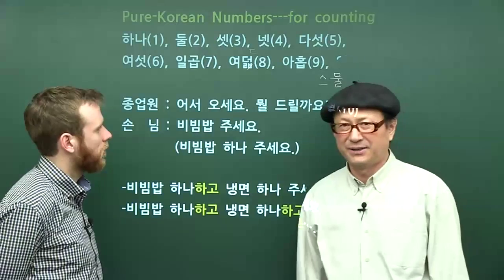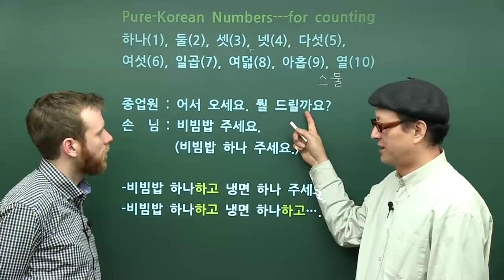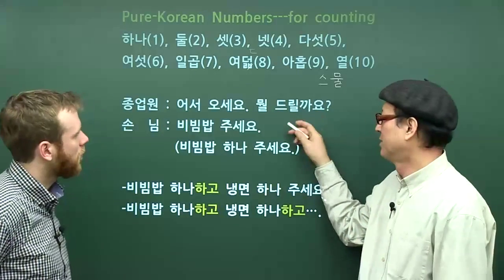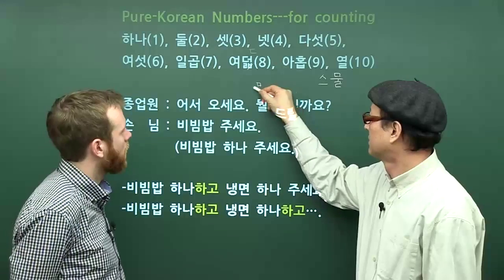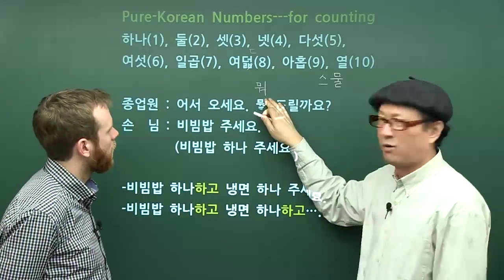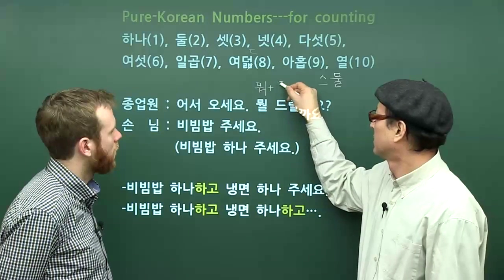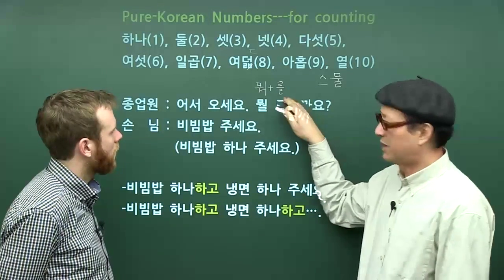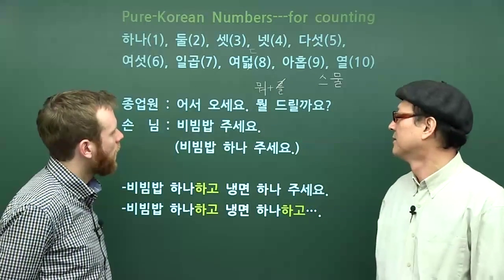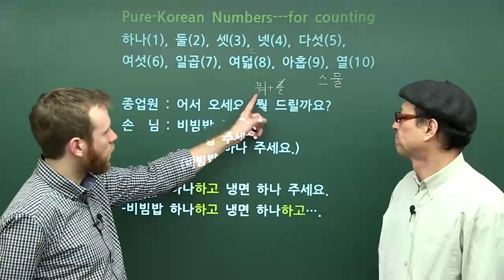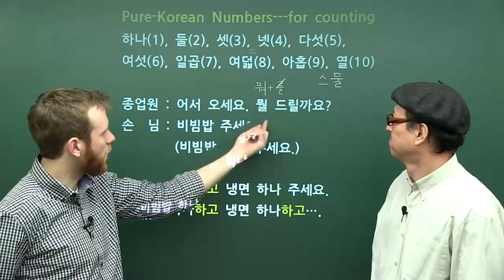뭘 드릴까요? There are two or three grammars there. 뭐 means 'what,' and 를 is the object marker. Shortened together, it becomes 뭘. And 드리다 is a more formal, polite way to say 주다 — 'to give.' So 드릴까요 — someone working in a restaurant talking to a customer would want to use more formal speech.